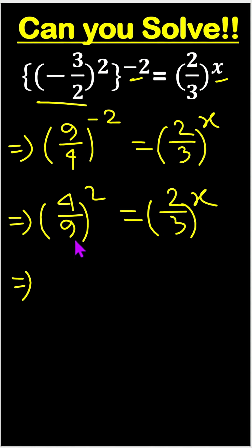So, 4 by 9, this one we can write 2 by 3, 2 by 3 square and here is till another square. So, 2 times 2 equals to 2 by 3 whole to the power x.